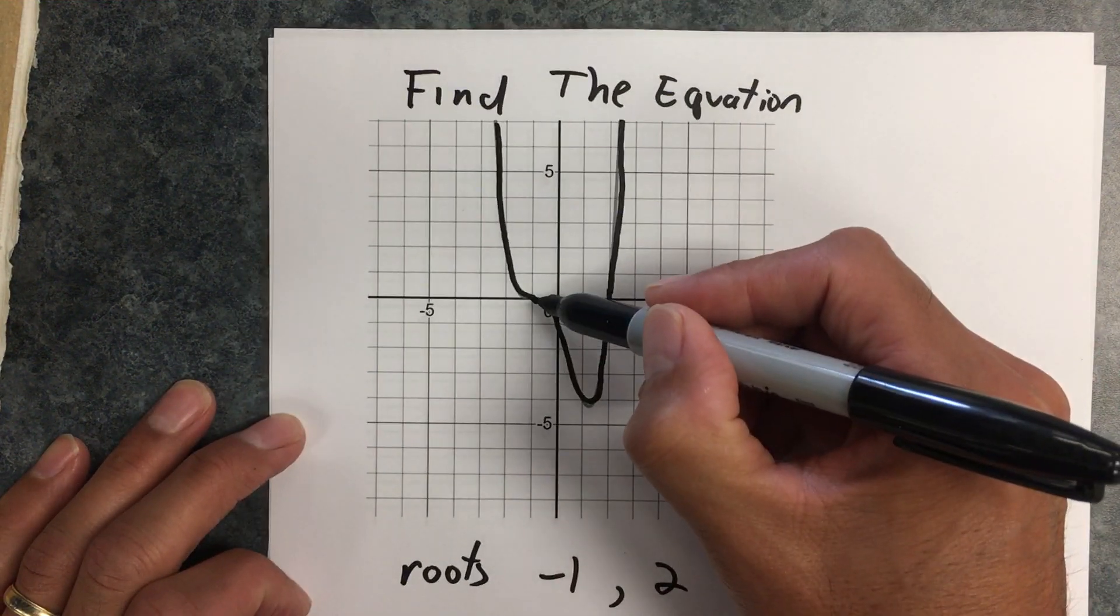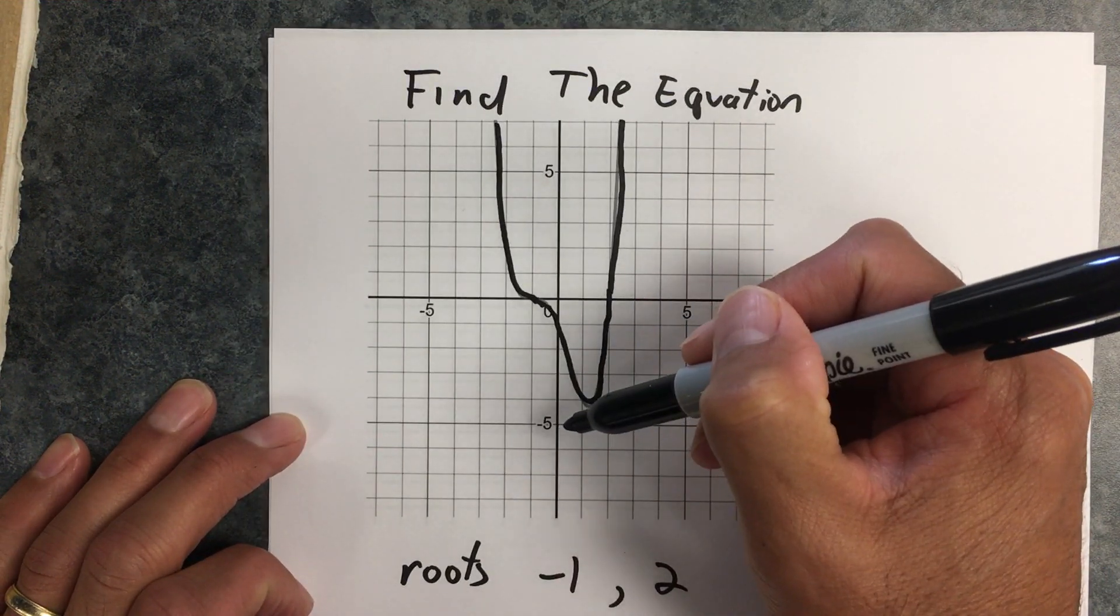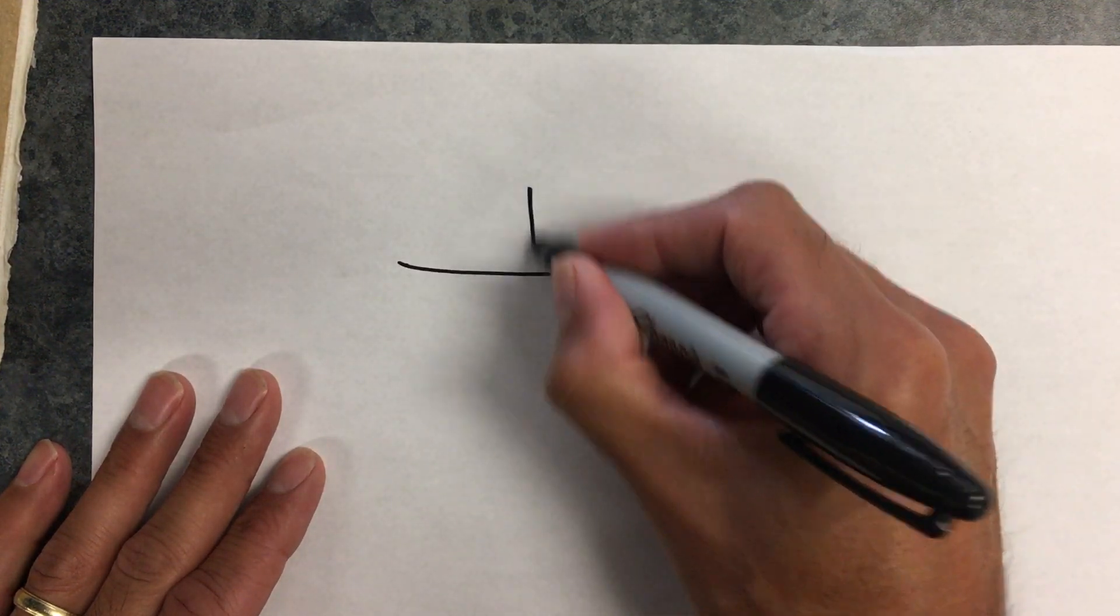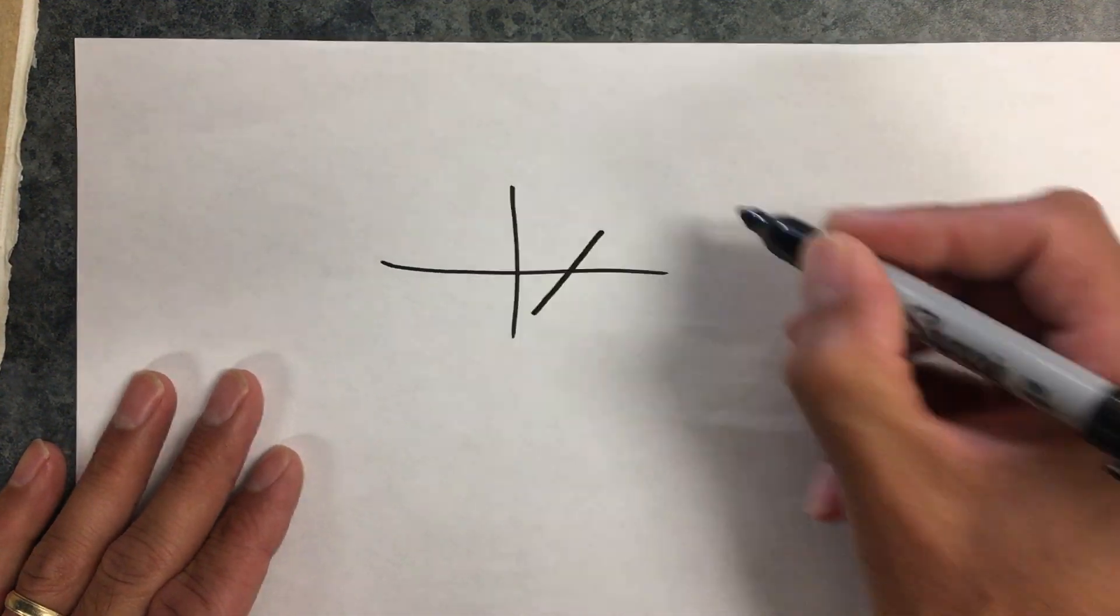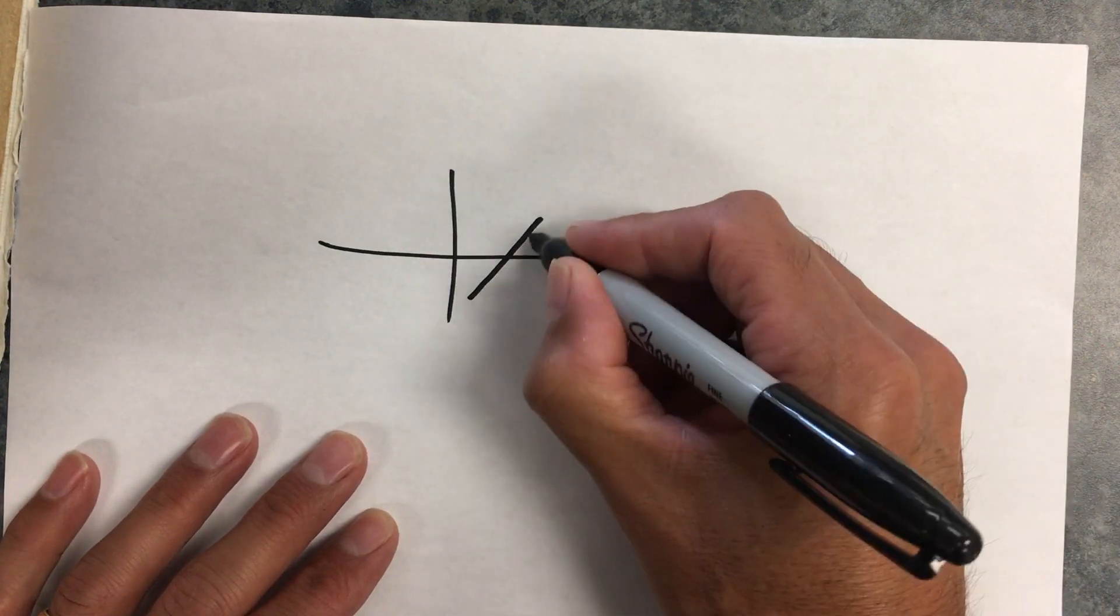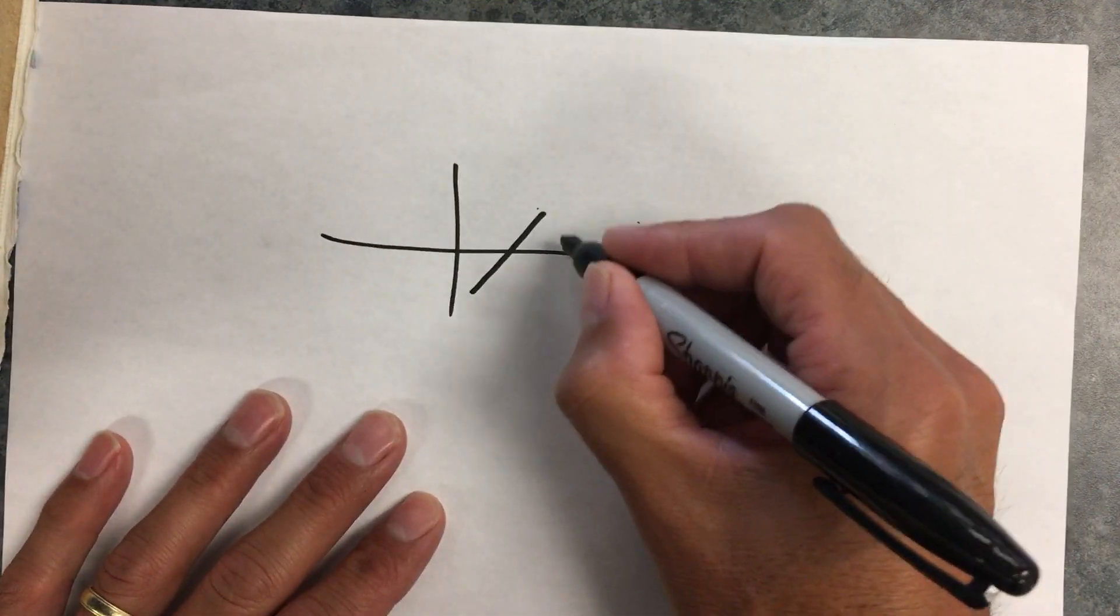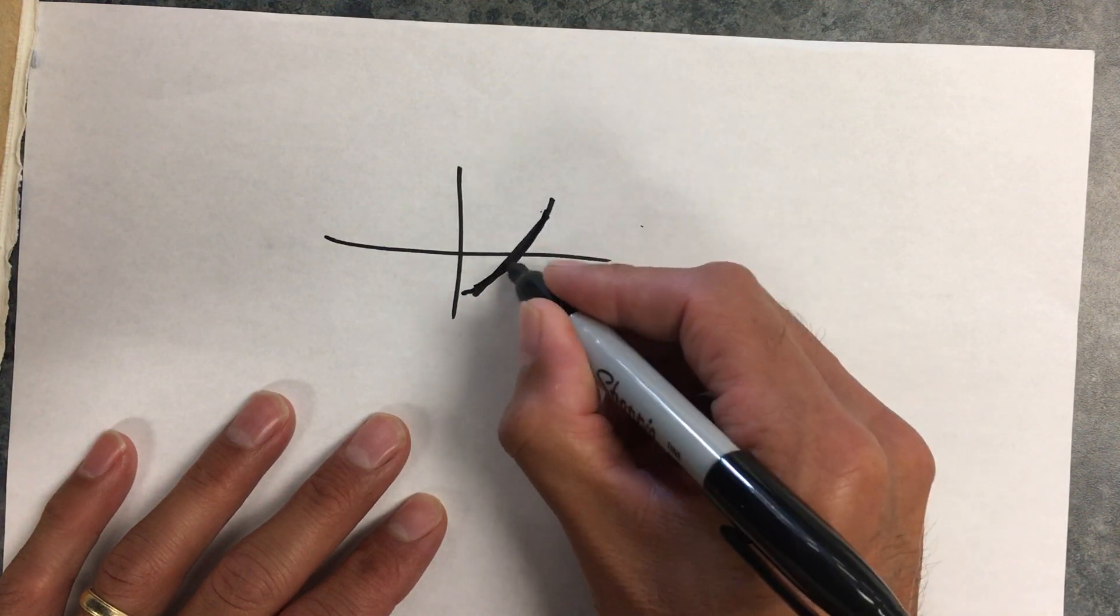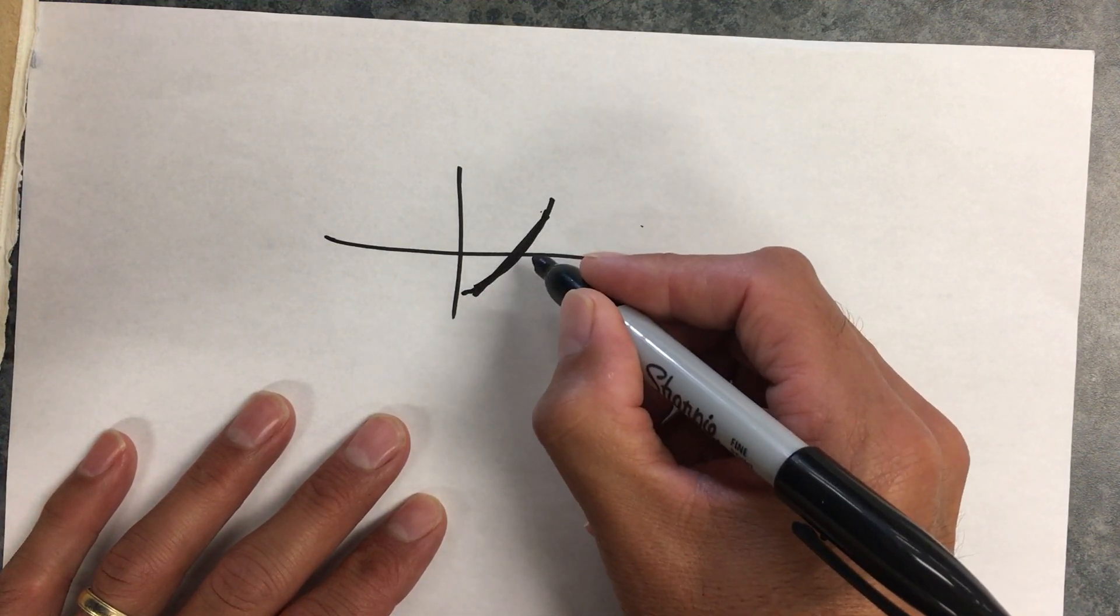Now what kind of root is this over here at negative 1? From experience, what I want you to learn to see is if a straight line crosses through it, then that's a single root. Even a curved line, but with nothing funny happening there, that's a single root.